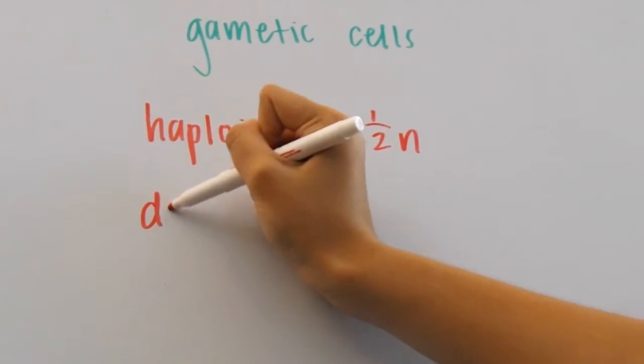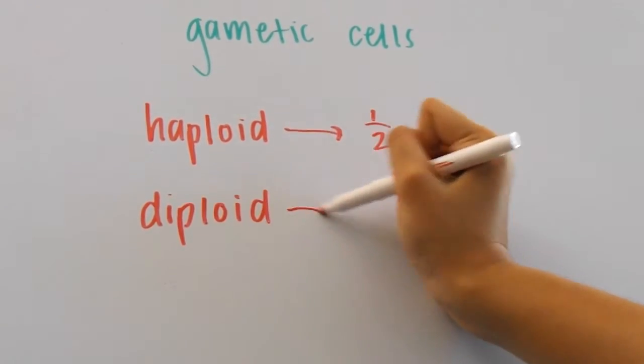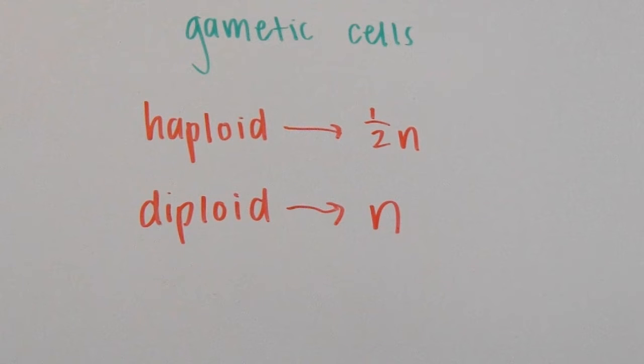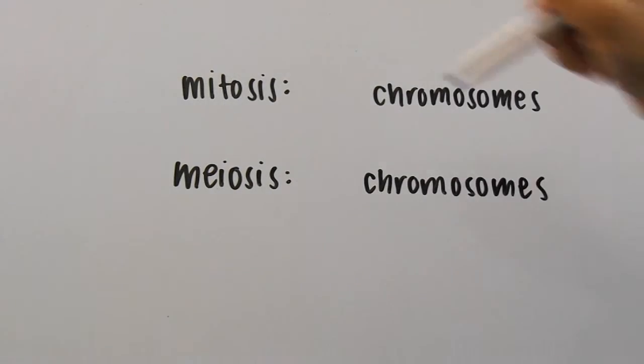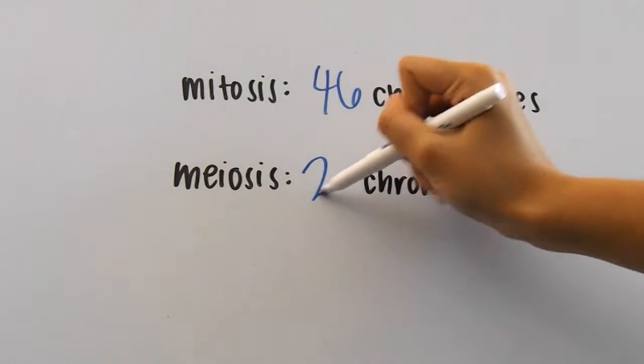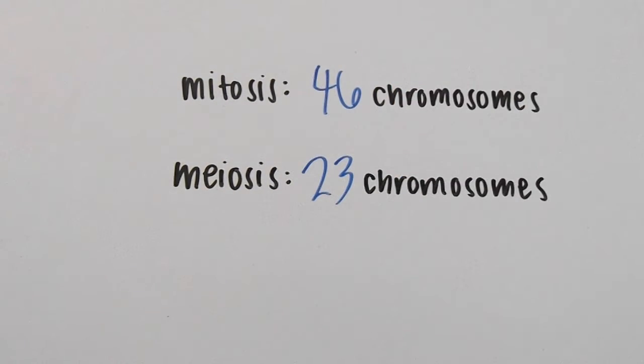This is what we call haploid. So haploid cells have half the number of chromosomes, and diploid cells have the regular number of chromosomes. That means mitosis produces cells with 46 chromosomes in humans, while meiosis only produces cells with 23 chromosomes.